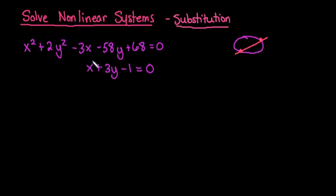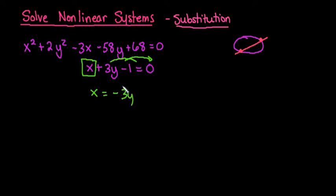I'm going to solve the linear equation for x. I could solve for y, but it's going to be easier to solve for x since it has a coefficient of 1. In order to solve for x, we move everything else to the other side, so x equals negative 3y — because positive 3 moves over as negative 3 — and the negative 1 becomes positive 1, giving us x equals negative 3y plus 1.